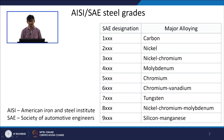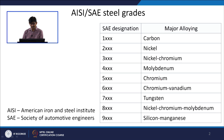If the first digit is 2, nickel is the major alloying element — carbon will also be there but nickel dictates the properties. The 3 series is nickel-chromium, 4 series is molybdenum, 5 series is chromium only, 6000 series is chromium and vanadium, 7000 is tungsten, 8000 is nickel-chromium-molybdenum, and 9000 is silicon-manganese.